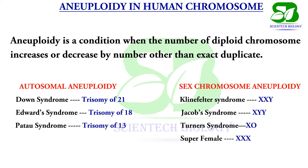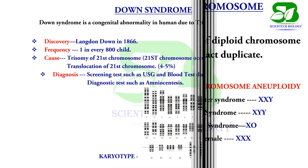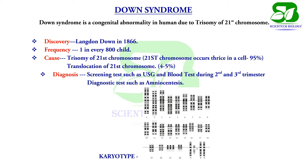Down syndrome is a congenital disorder in humans due to trisomy of the 21st chromosome. Translocation of the 21st chromosome may be another reason for this syndrome. This syndrome was first reported in 1866 by Sir Langdon Down. One in every 800 children has this disorder.